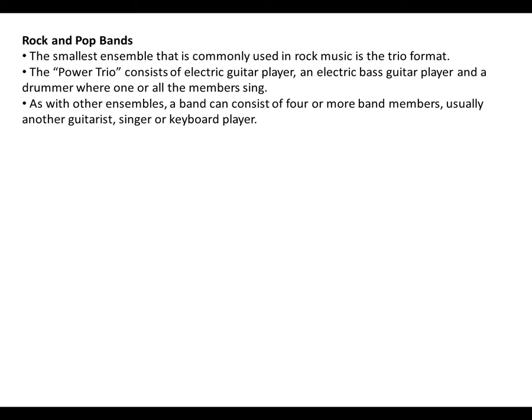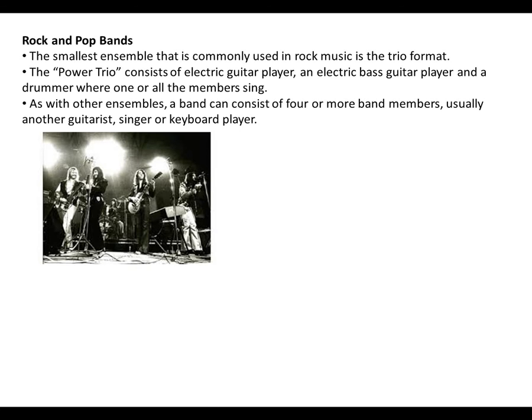Rock and pop bands: the smallest ensemble commonly used in rock music is the trio format, called the power trio, which consists of an electric guitar player, an electric bass player and a drummer, where one or all the members sing. As with other ensembles, a band can consist of four or more band members — usually another guitarist, singer or keyboard player. The picture we have shows an old ensemble with drums, guitars and a keyboard player as well. They are all singing, as you can see with the mic stands. Then a power trio as well.